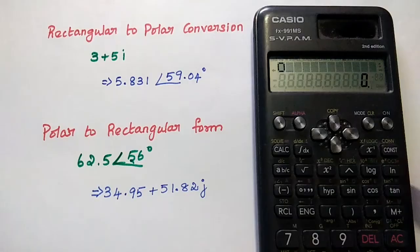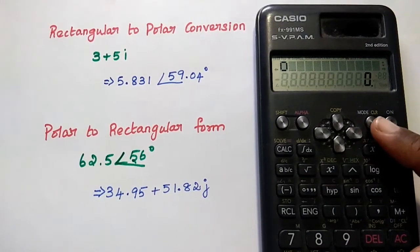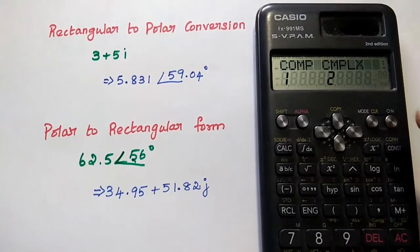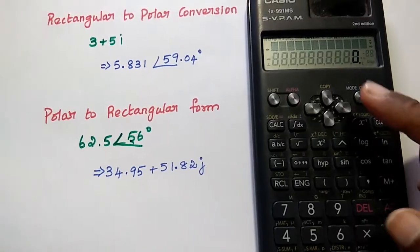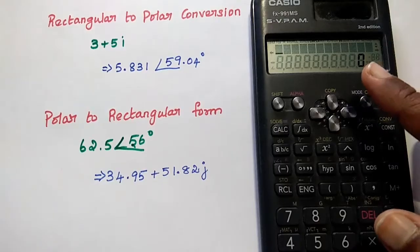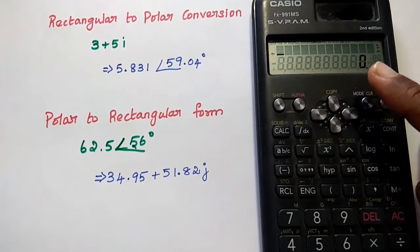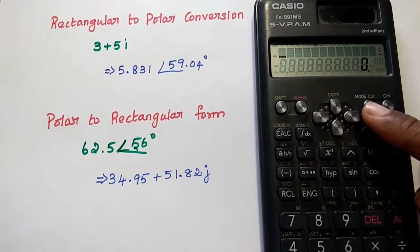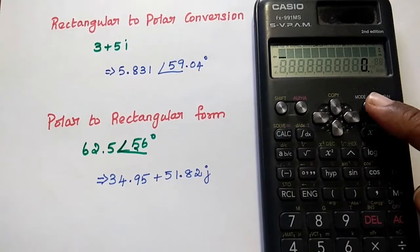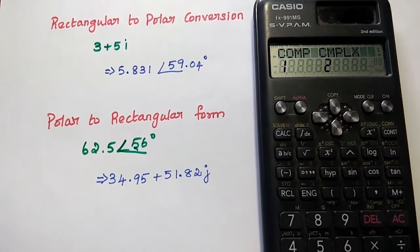Here in the calculator, first step is to select the mode as complex. Press mode and select number 2. You can see the mode is set as complex CMPLX in calculator. The first step is to select the mode as complex by pressing this number 2.